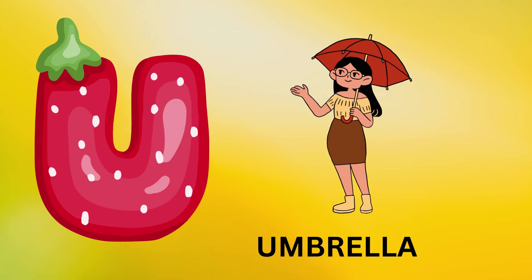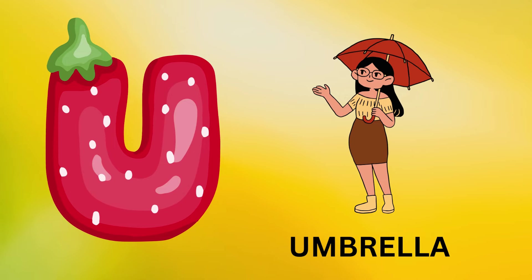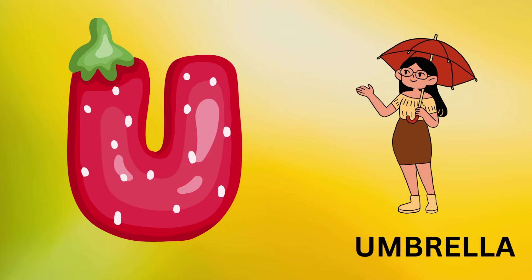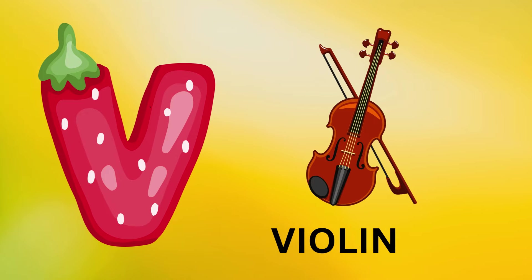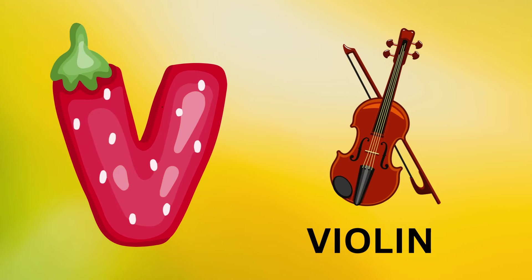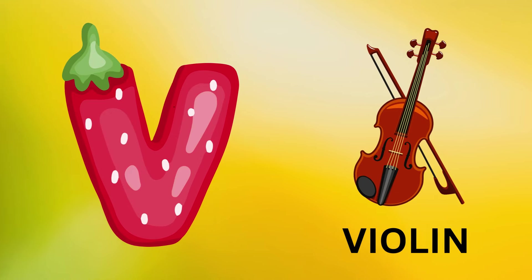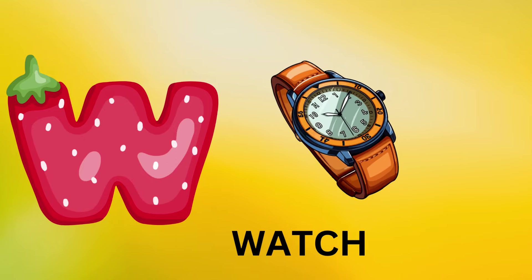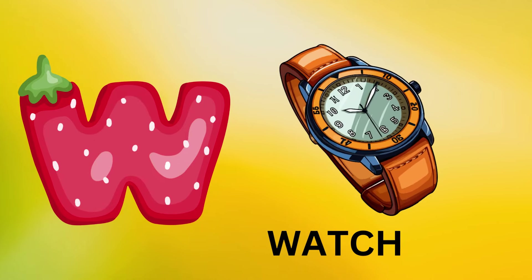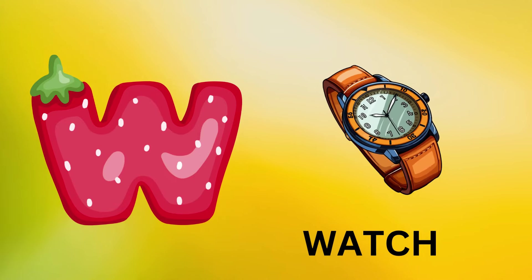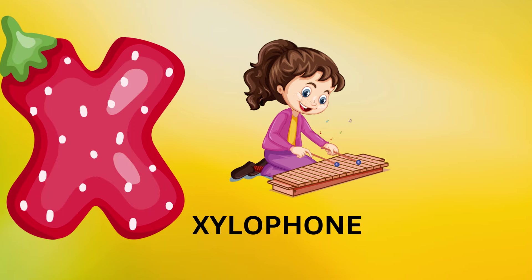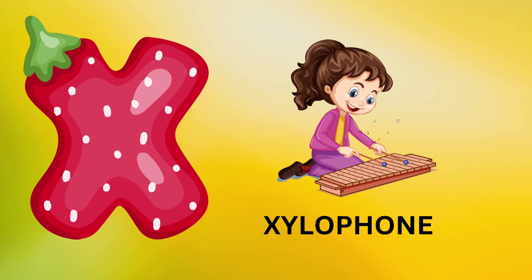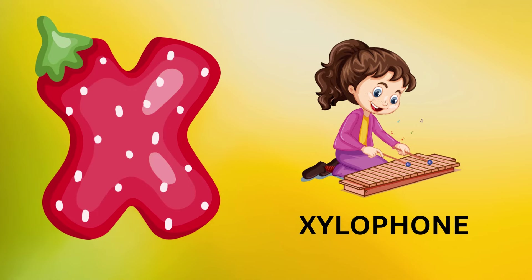U is for umbrella, u-u-umbrella. V is for violin, v-v-violin. W is for watch, w-w-watch. X is for xylophone, z-z-xylophone.